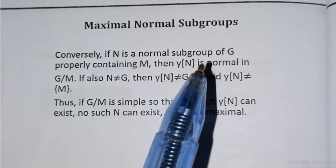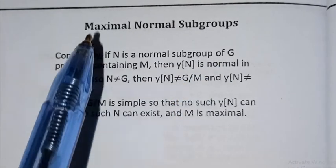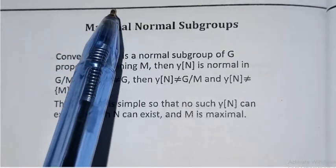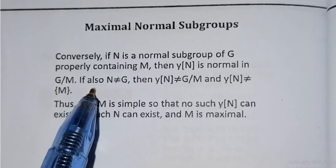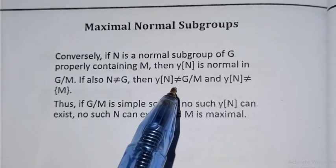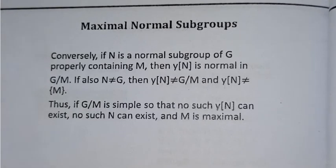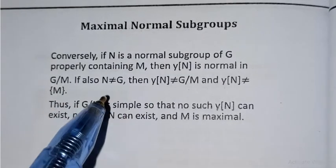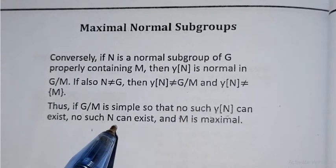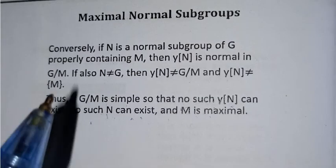Now for the converse: suppose G over M is simple. If N is a non-trivial normal subgroup of G that properly contains M, then the image Y(N) in G over M would be a non-trivial proper normal subgroup. But G over M is simple, so no such Y(N) can exist, giving us a contradiction.